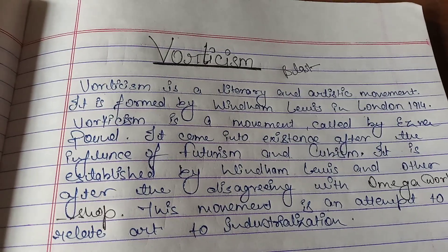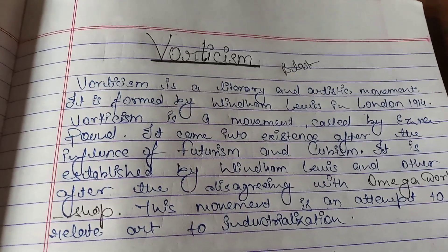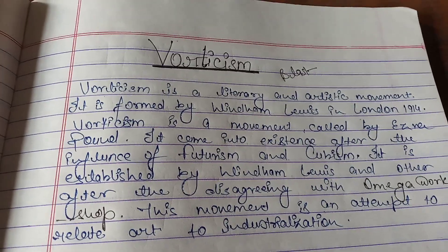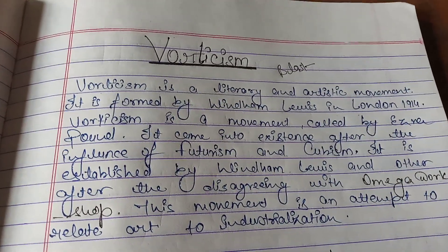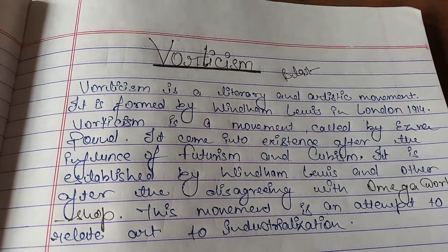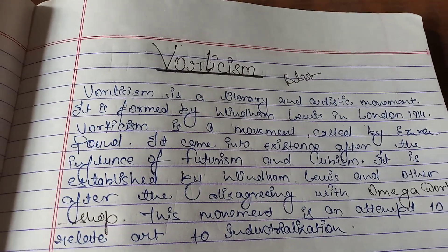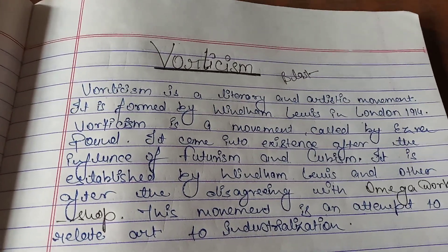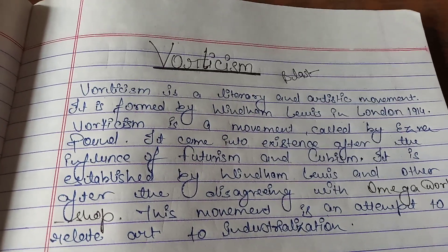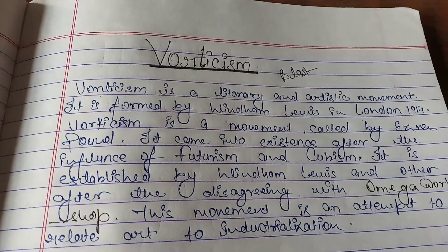The Vorticists were promoting the energy of machines and machine-made products. They believed that by doing this, the movement could flourish.